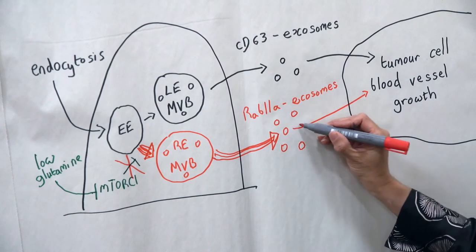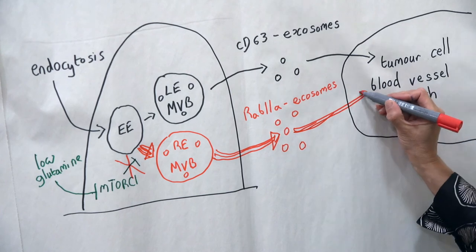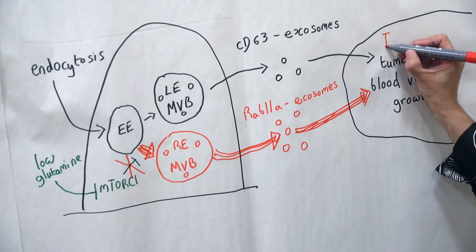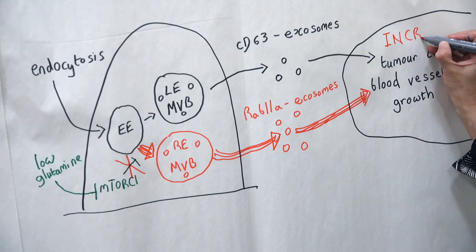These RAB11a exosomes have enhanced pro-tumorigenic effects on cancer cells and blood vessels, both in vitro and in xenograft models in vivo.